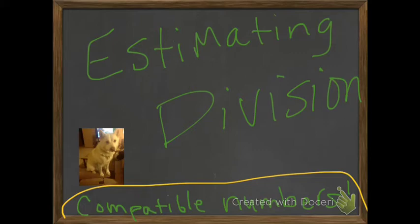Another way to say it is division by using compatible numbers. Compatible numbers means numbers that are compatible - you are dividing numbers that can go into each other equally. So let's go on and I will tell you a little bit more.